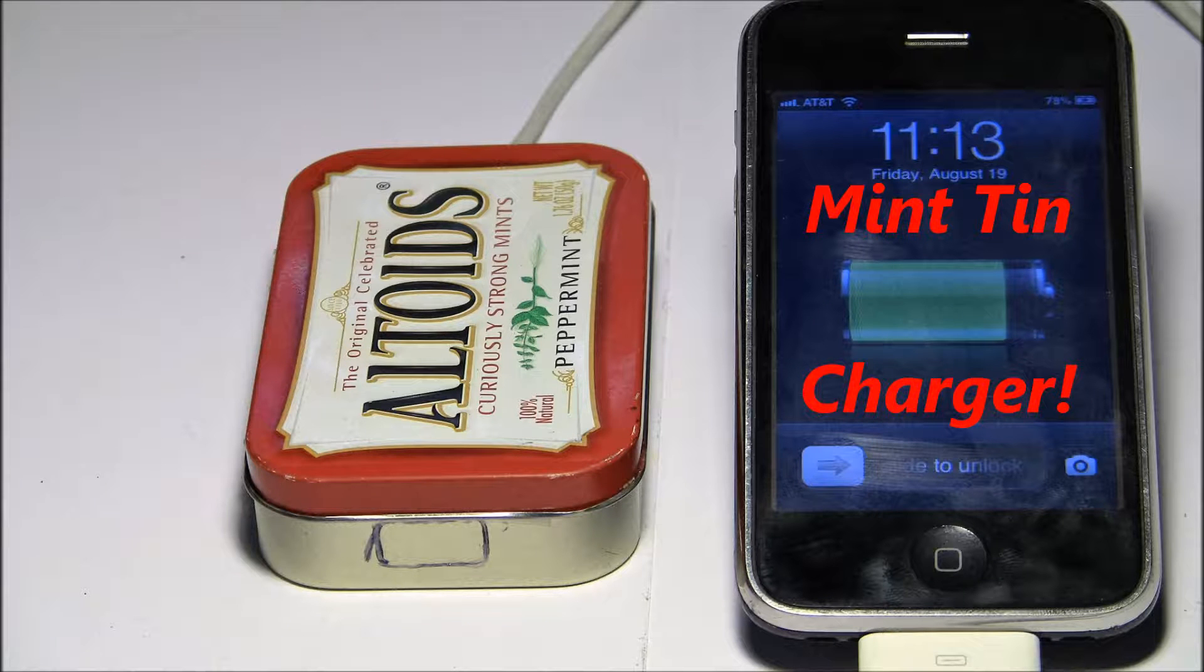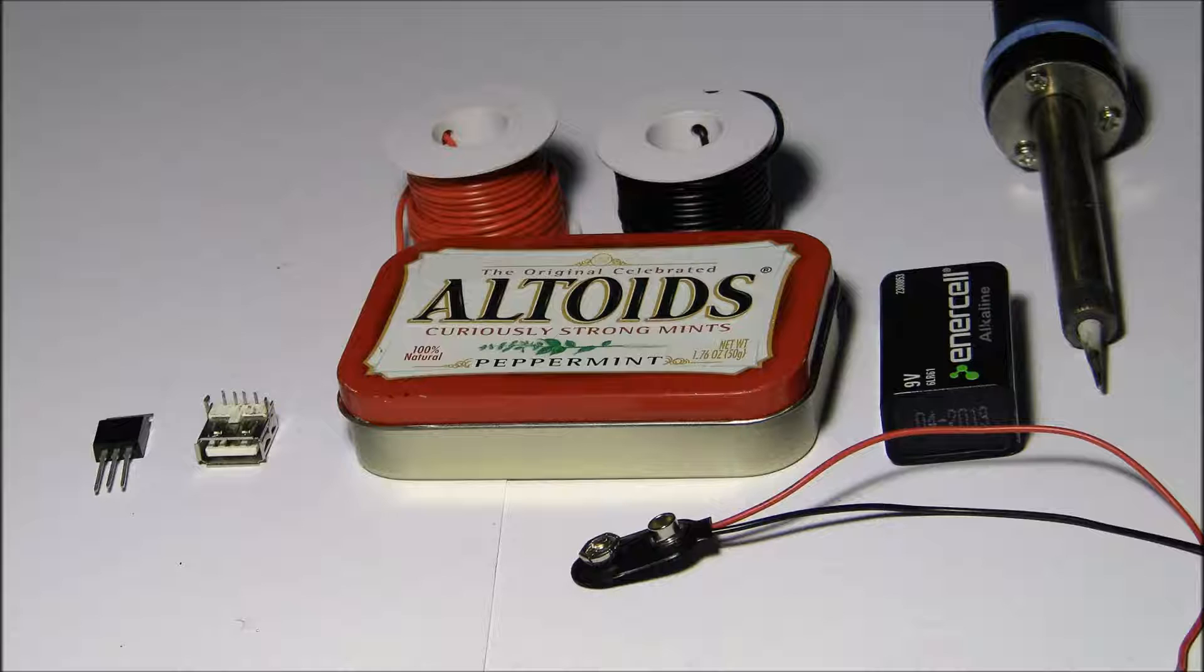How to make a mint tin charger. You're gonna need a 5 volt regulator, a USB port, a mint tin, wire, 9 volt battery, a 9 volt battery clip, soldering iron, and a hot glue gun.